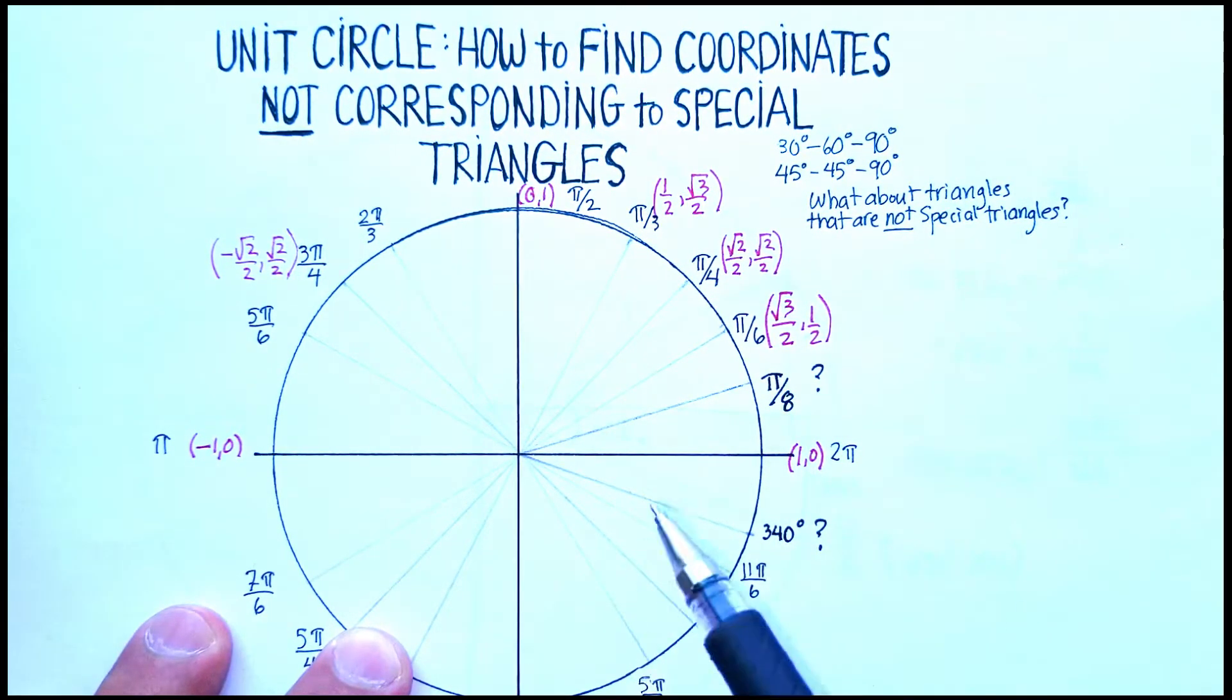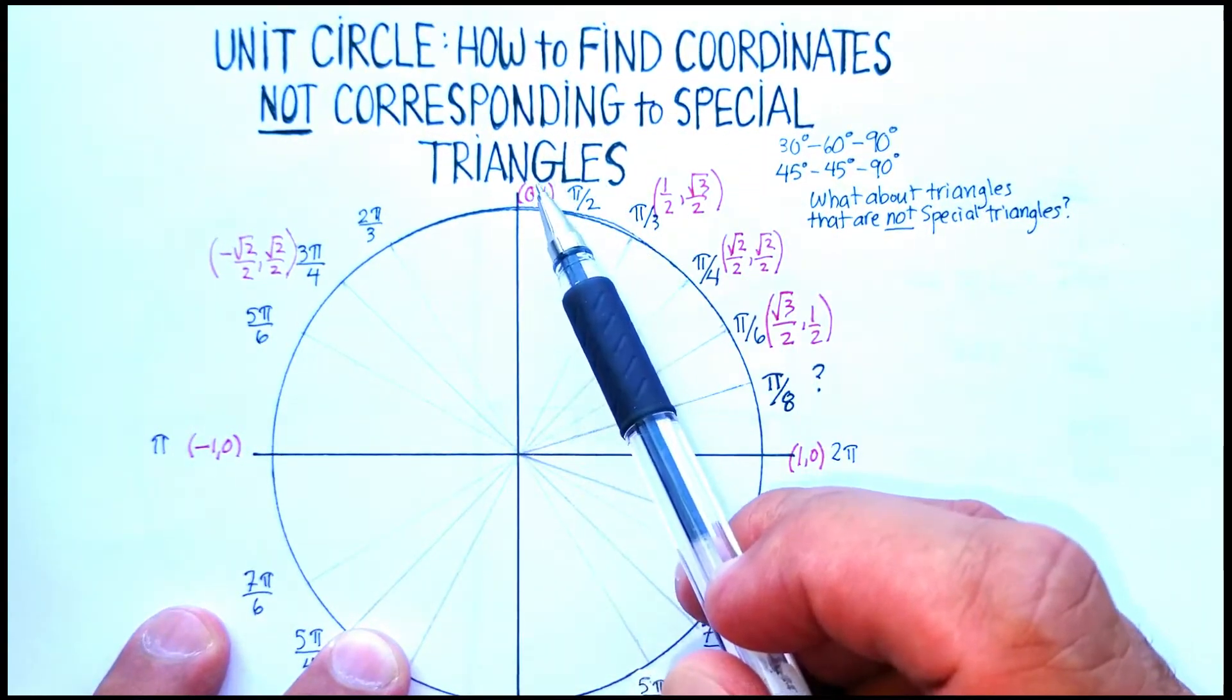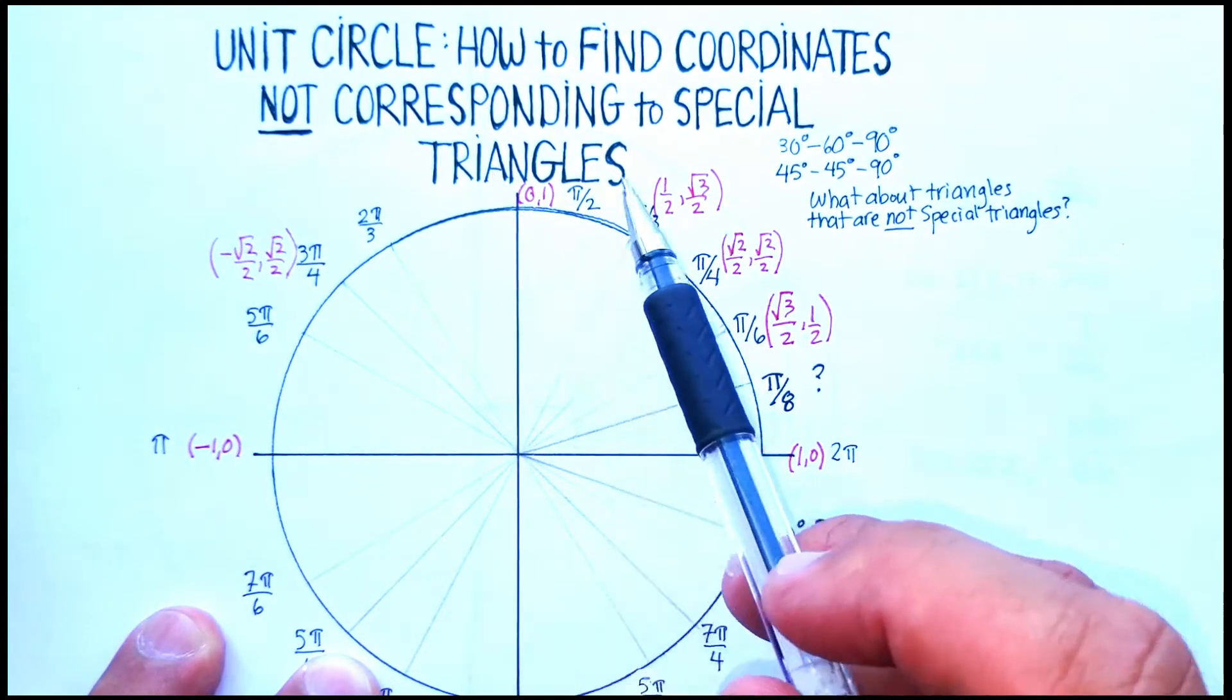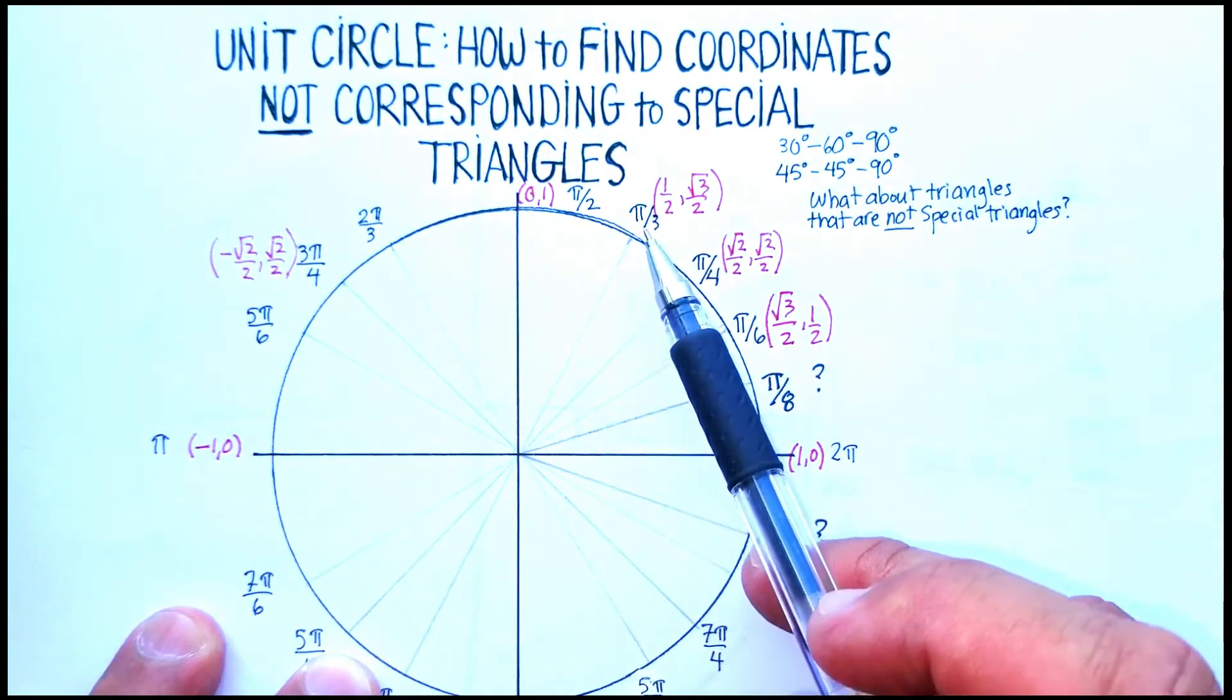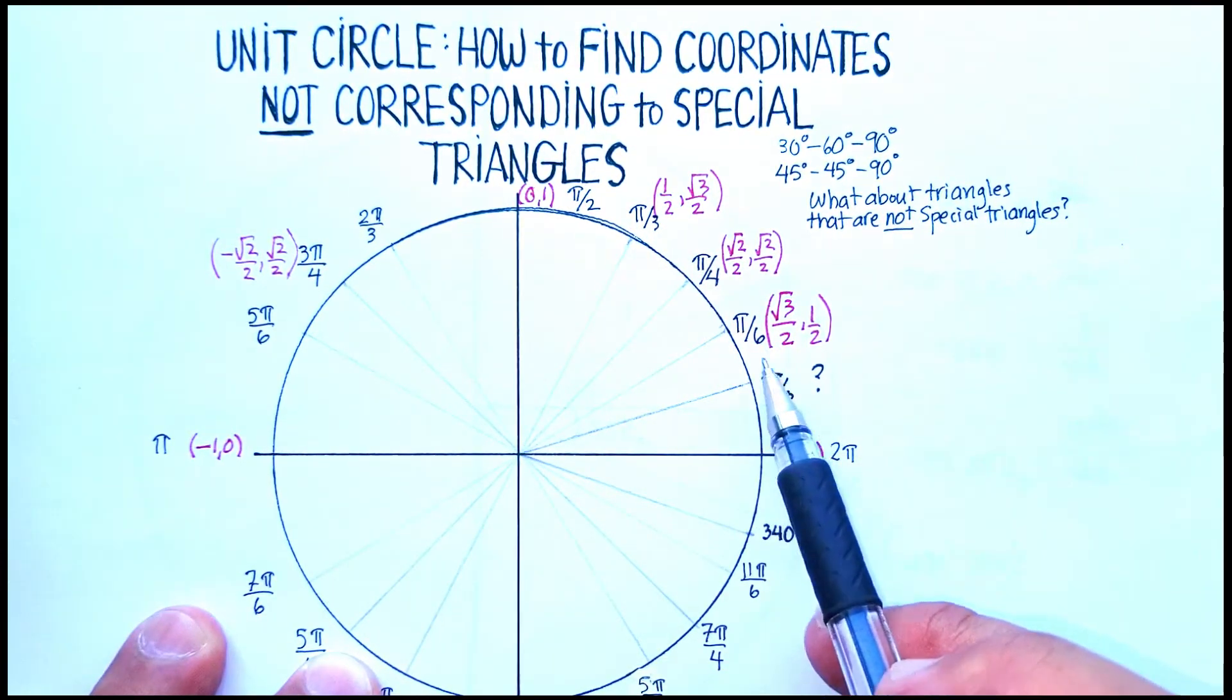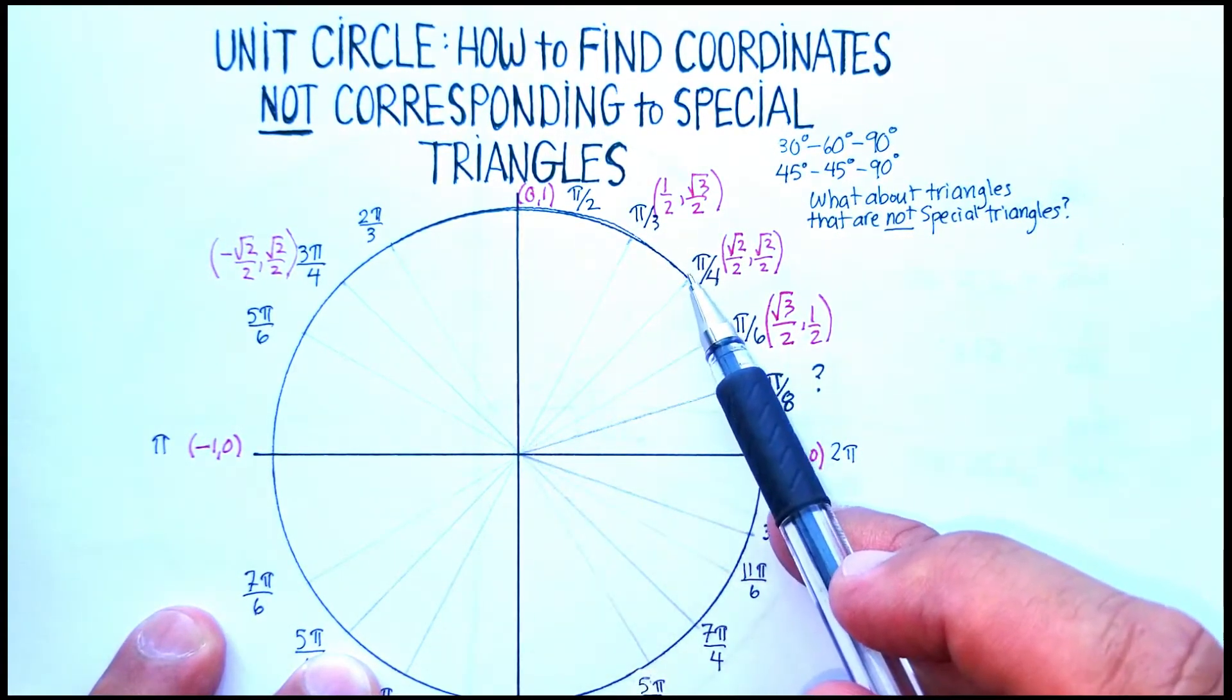Okay, in this video we're going to find coordinates that don't correspond to the special triangles on the unit circle. Now remember, when they do correspond to special triangles, it's if they form a 30-60-90 triangle, like here for example, or here, or if they form a 45-45-90 triangle, which would be like here, π/4.